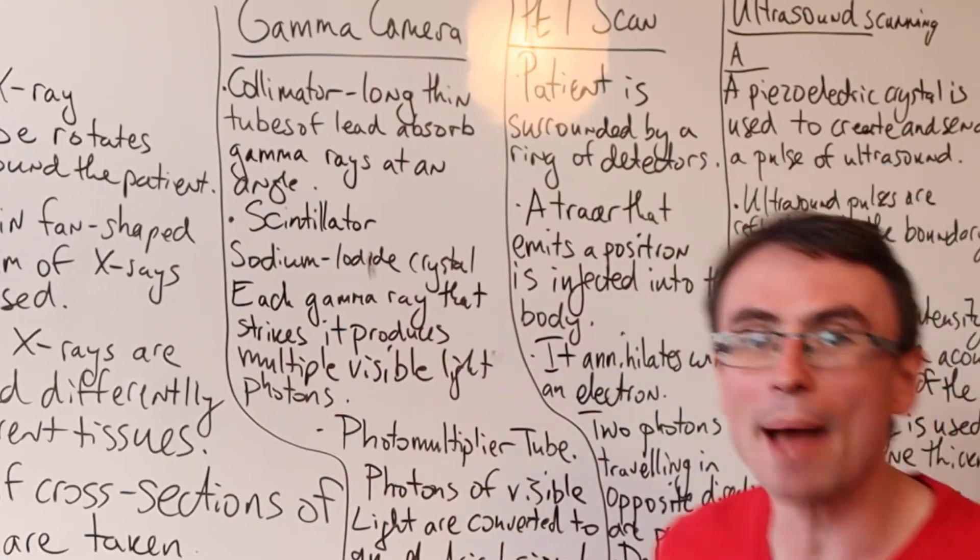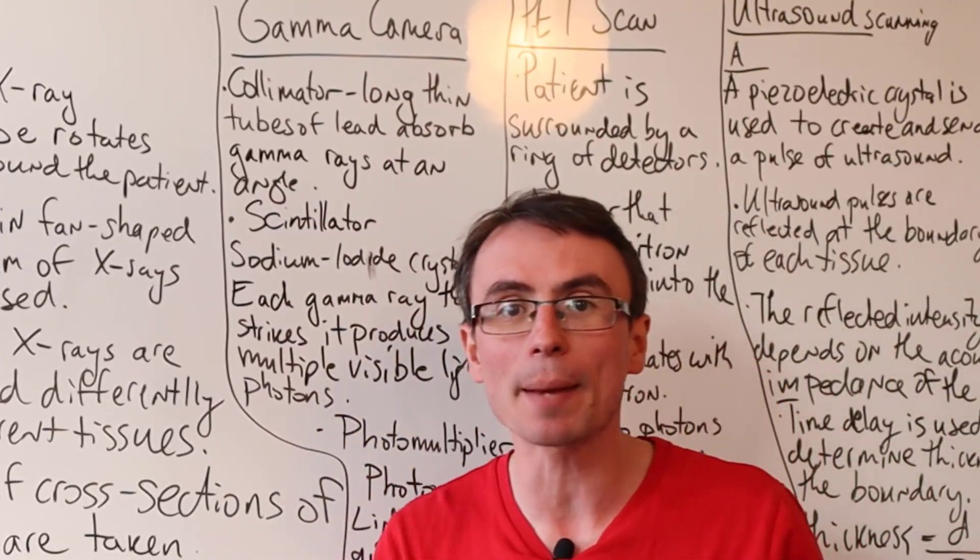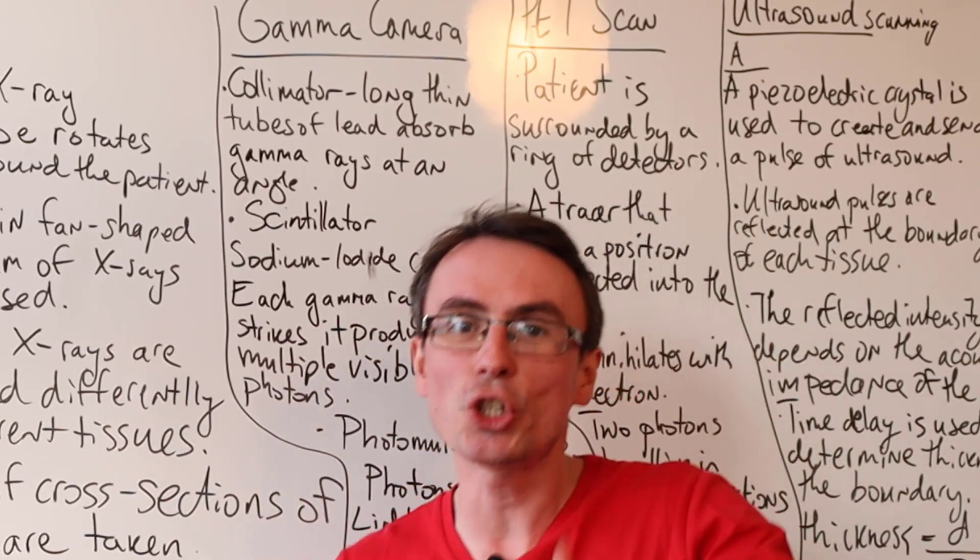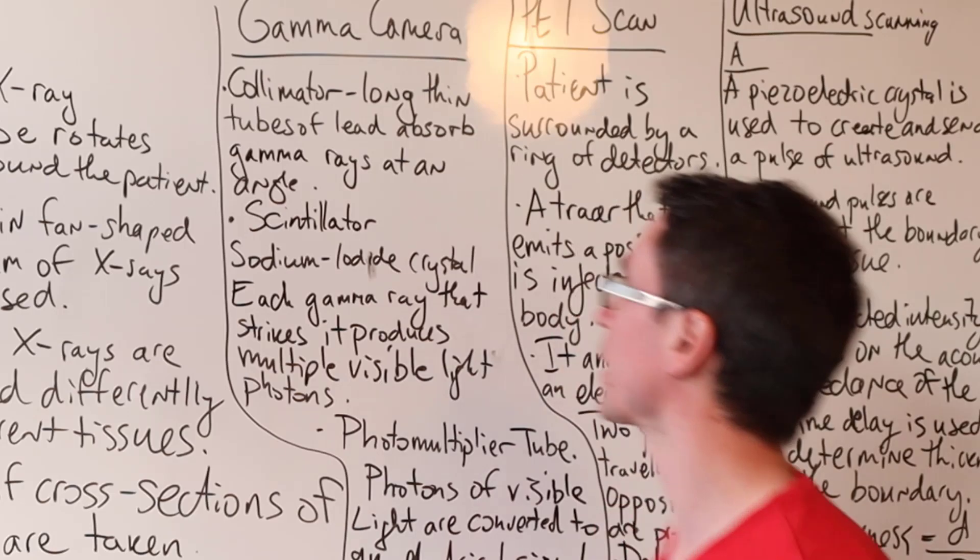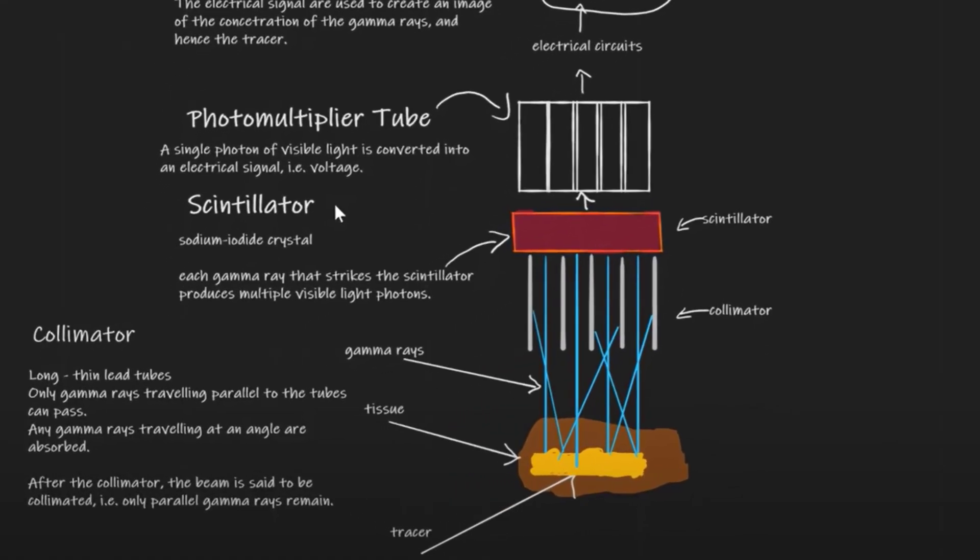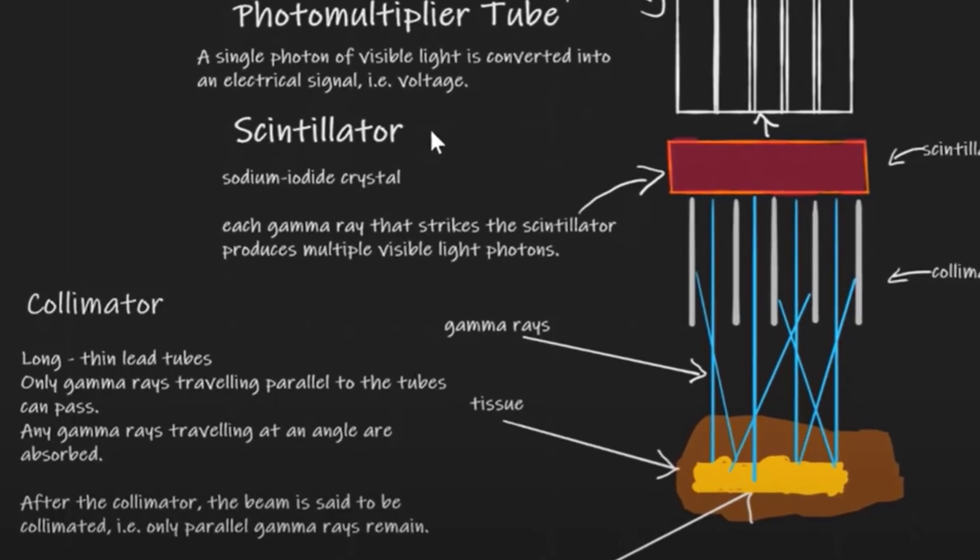On to the gamma camera. So the gamma camera is used with medical tracers that have been either injected or consumed by the patient. It has the following components. First of all, the gamma rays that are emitted from the patient go through the collimator.